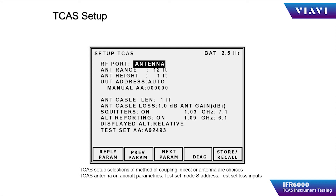Measure and input the distance and height values for the antenna range and height. Select auto for the UUT address so that the IFR 6000 can automatically determine the mode S address of the aircraft being tested. If the test set has trouble determining the address, then the selection should be manual and the operator must input the desired test aircraft address.